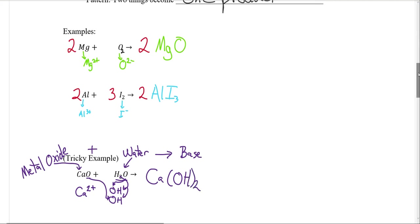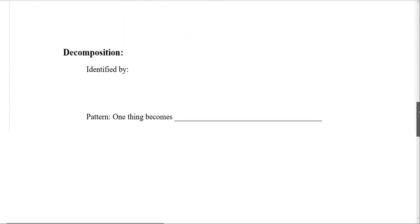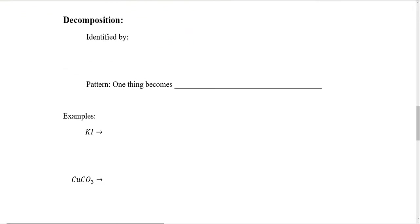Let's move on to decomposition. How can you tell if something's a decomposition? It's identified by having only one reactant. And the pattern for any decomposition is that one thing breaks into multiple parts.